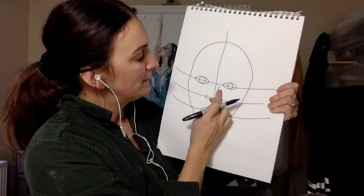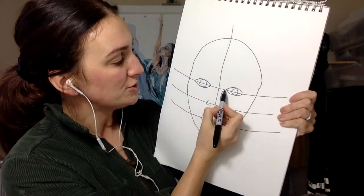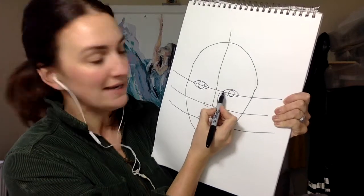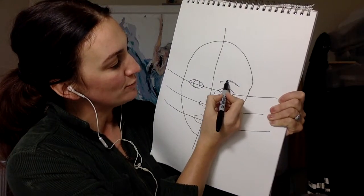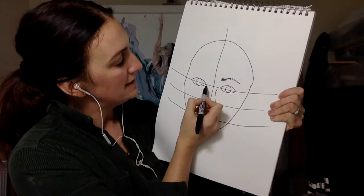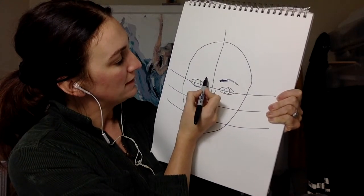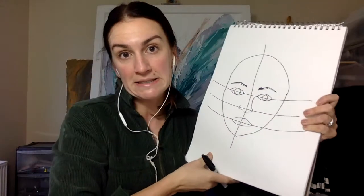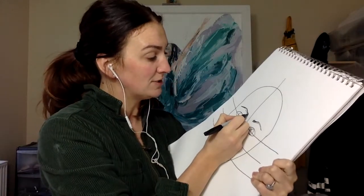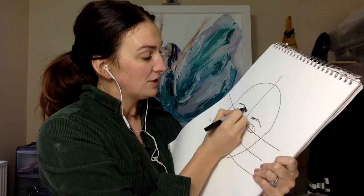So now the eyebrows as well. The easiest way to do that is just where we had the first points for our eyes we're going to go up and that's going to be the start of the brow, so you can do your brow whichever way you want and the same here we're going to go up and then your brow. People say eyebrows are like sisters you know rather than twins so it doesn't matter if they're slightly varied, you can make them as big as you want.